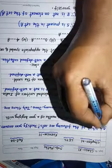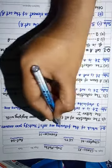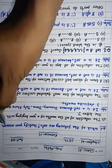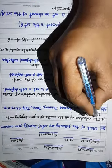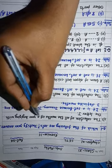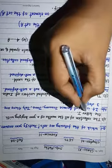In this exercise, the first question is, which of the following are sets? Justify your answer. First part is the collection of all the months of a year beginning with the letter J.